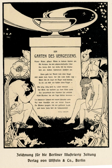Much of the current knowledge of memory has come from studying memory disorders, particularly amnesia. Loss of memory is known as amnesia. Amnesia can result from extensive damage to regions of the medial temporal lobe, such as the hippocampus, dentate gyrus, subiculum, amygdala, the parahippocampal, entorhinal, and perirhinal cortices, or the midline diencephalic region — specifically the dorsomedial nucleus of the thalamus and the mammillary bodies of the hypothalamus.